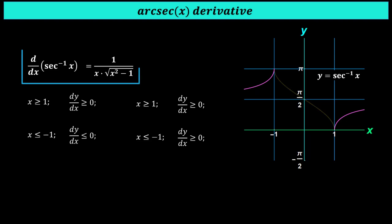So, to make the derivative always positive, we put absolute value sign. This is the reason why the derivative of inverse secant has an absolute value. Thank you. Thanks for watching.